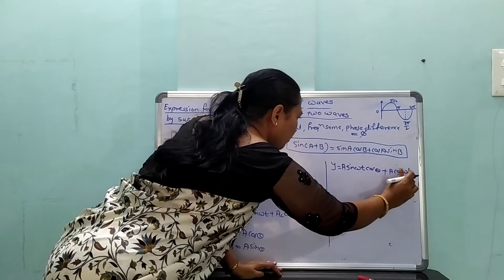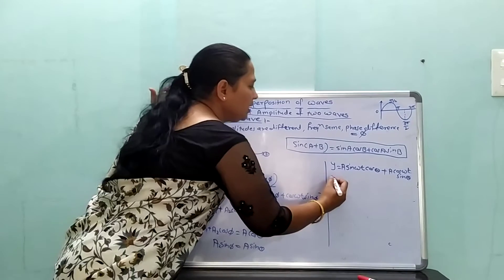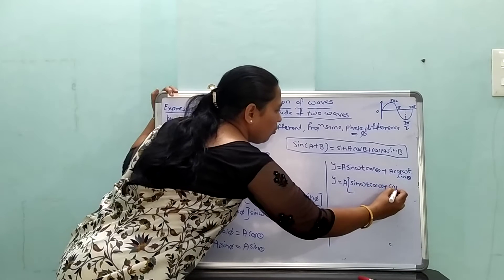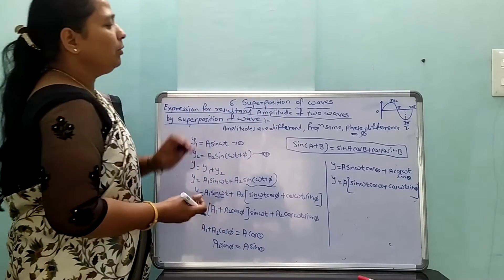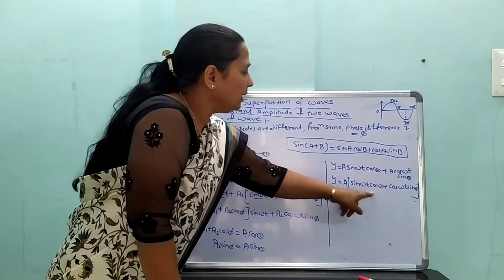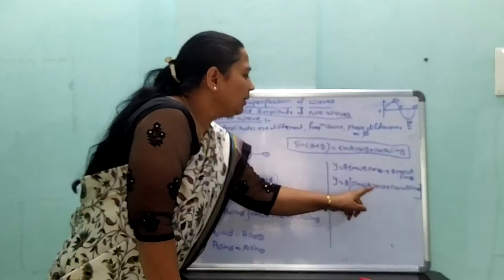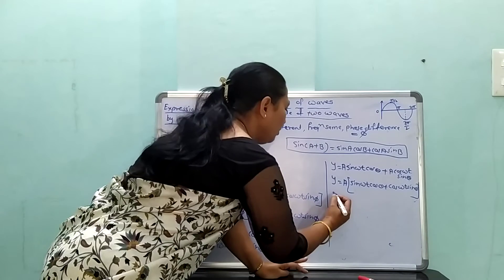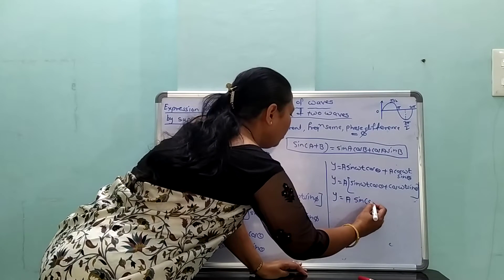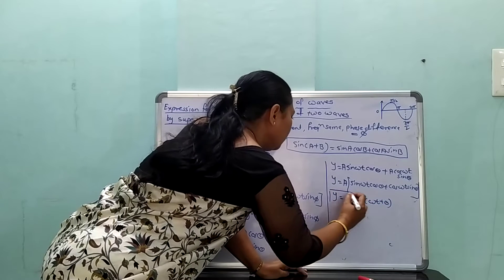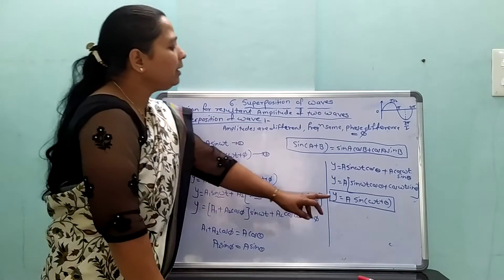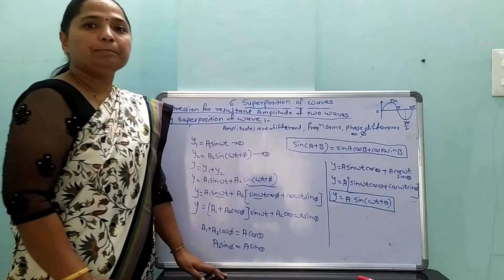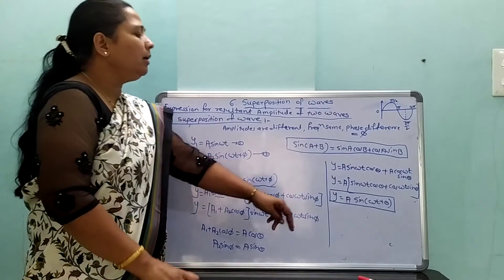That equation can be written using the formula sin(A + B) = sin A cos B + cos A sin B, where A means ωt and B means θ. Therefore y = A sin(ωt + θ). This is the resultant wave equation by the superposition principle. The resultant wave is also obtained in sine function form. Here ωt + θ represents the state of oscillation or state of vibration, and θ represents the phase.